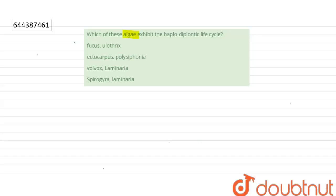The question is: which of these algae exhibit the haplodiplontic life cycle? Fucus, Ulothrix, Ectocarpus, Polysiphonia, Volvox, Laminaria, Spirogyra, Laminaria.